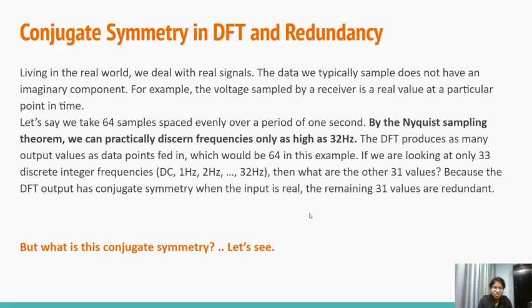Conjugate symmetry in DFT and redundancy. We live in the real world and we deal with real signals. The data we typically sample does not have the imaginary component. For example, the voltage sampled by a receiver is a real value at a particular point in time. Let's say we have 64 samples spaced evenly over a period of 1 second. By the Nyquist sampling theorem, we can practically discern frequencies only as high as 32 hertz. This is because here the sampling frequency is 64 hertz.